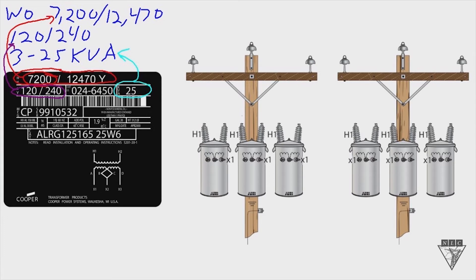So when we're banking transformers together, there's two other things that we need to look at. And the first one I'm going to circle is the impedance. So when you think of impedance, think of resistance. And you want to try and get three transformers that have the impedance as close to each other as possible. So we've got 1.9% as our impedance.